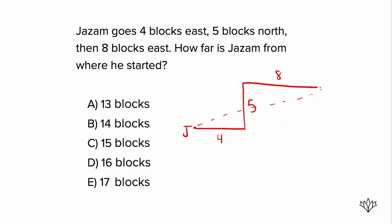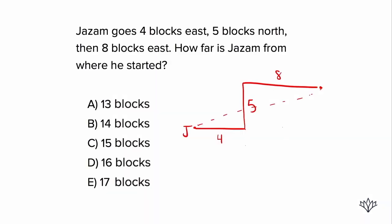The question is asking how far is Jazam from where he started, so we need to draw a line from where he started to where he ended up. The question is really asking: what is the length of this dashed line? We can make this easier by creating a triangle — that's how problems like this break down. If we draw across the bottom, the first piece is four and the next piece across the bottom is eight, because it's the same as the top. So in total, that length across the bottom is 12. And the height on the side has to be five, because it's the same as the five blocks north.